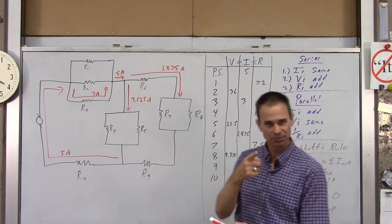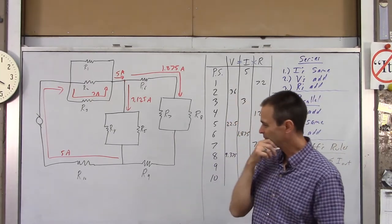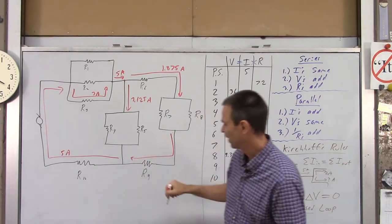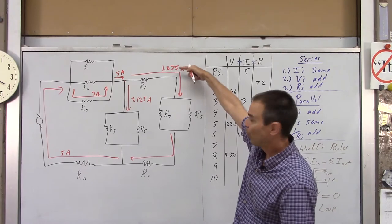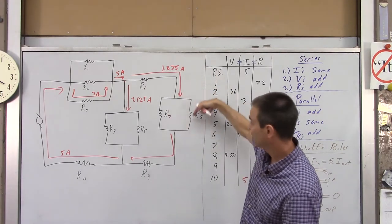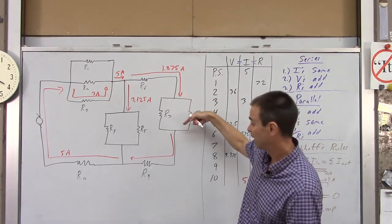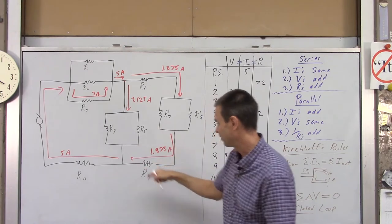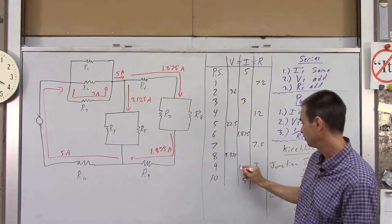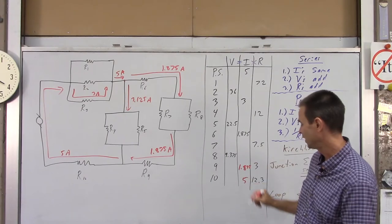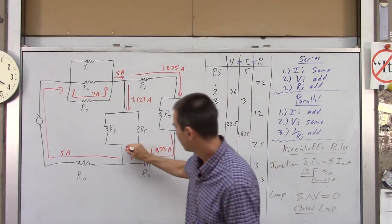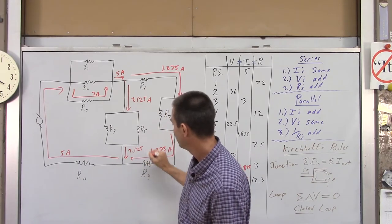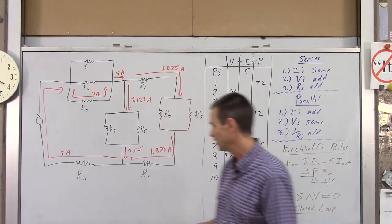So I'm kind of done with the currents. Well, I take that back. There is one more current. You guys see there's one more current we can figure out? Right here. Actually, there's a couple more we can figure out. I know that 1.875 amps goes into that junction, it splits up, some goes that way, some goes that way. I don't know how much of each yet. But when it gets back down to here, it's going to be 1.875 again. I can put that in my chart. That's the current through R9. And then I also know that this current right there has to be the same as that current, which is 3.125. And those two would add up to 5.